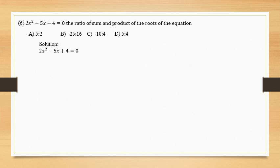Here solution 2x square minus 5x plus 4 is equal to 0. Here we have to find out the value of a, b and c. a is equal to 2, b is minus 5 and c is 4.